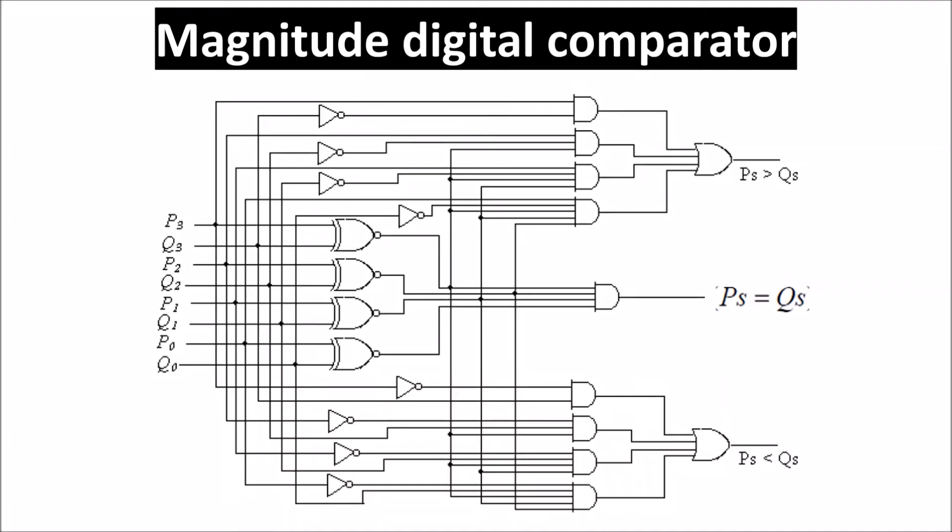Magnitude comparator is also called magnitude digital or binary comparator. It compares and indicates if the binary number P is equal to or greater than or less than the other binary number Q.